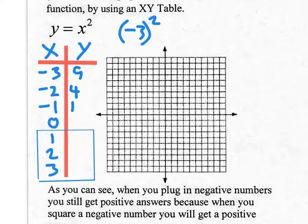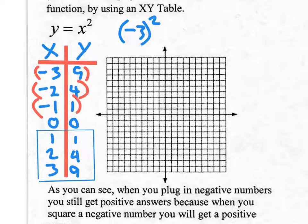When I plug in 0, 0 squared is 0. Plug in 1, 1 squared is 1. Plug in 2, 2 squared is 4. Plug in 3, 3 squared is 9. All of these are coordinates, so you can put parentheses around all of them. We need to graph these to get our parabola.